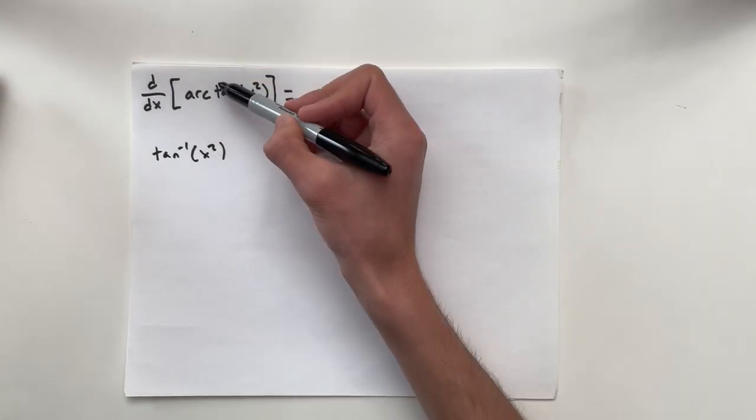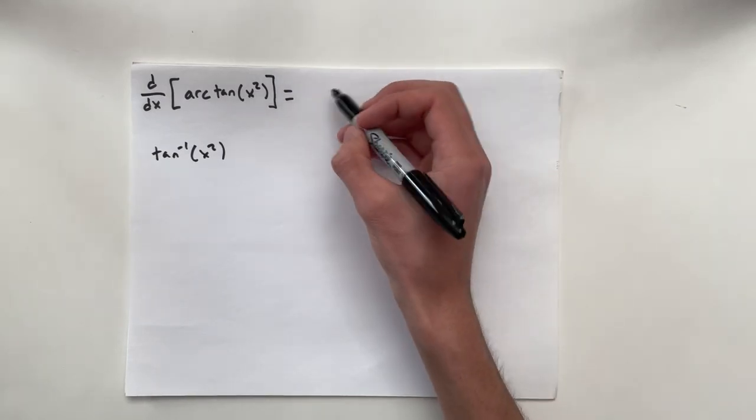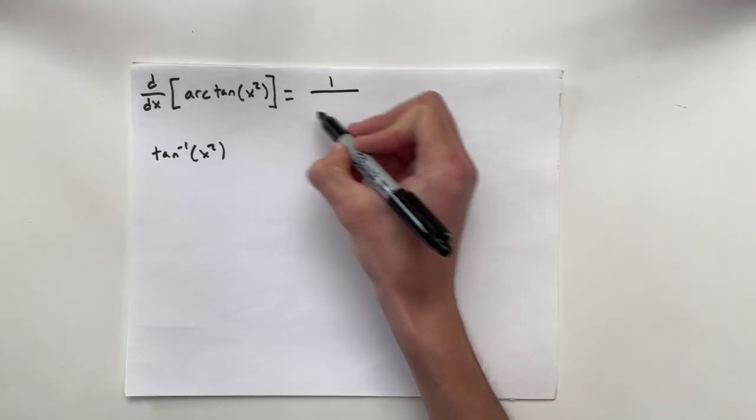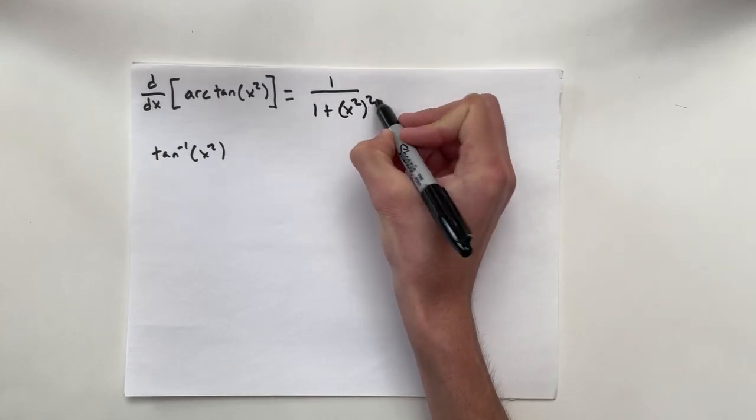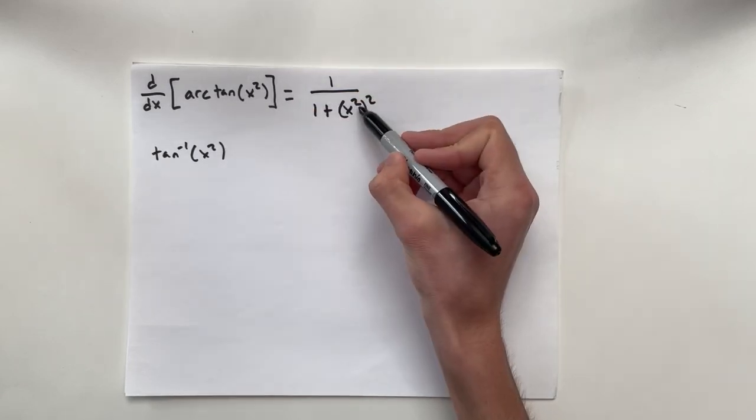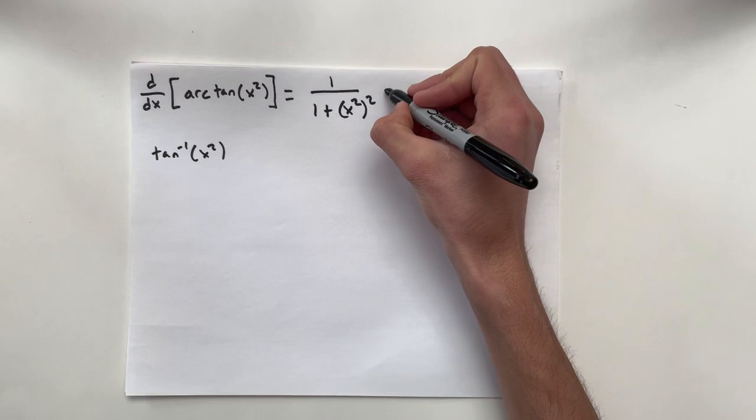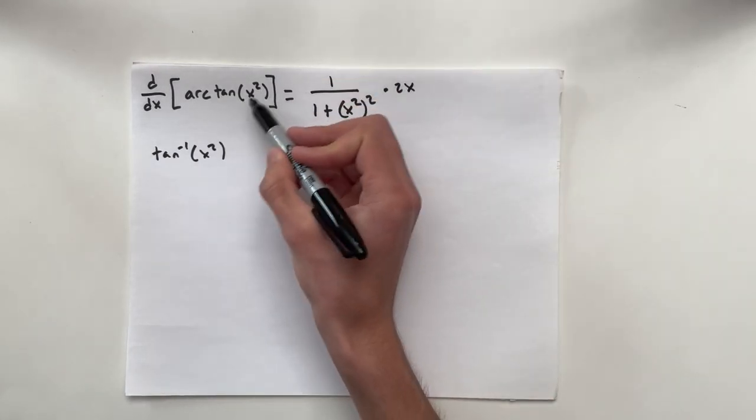When we take the derivative of this, we have to know our trig identities. That's going to be 1 over 1 plus x squared, squared. That's our inner function right there. Then we need to multiply by the chain times 2x because that's the derivative of the inside.